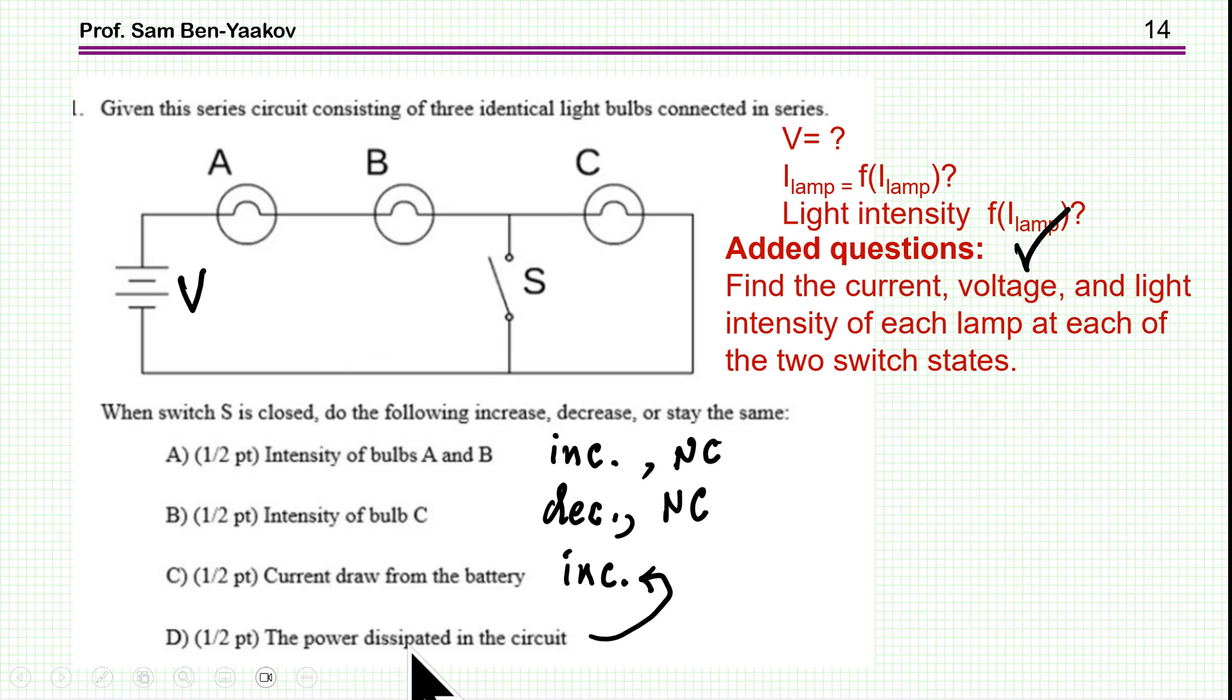Now, the power dissipated in the circuit, well, it's the same as the current. Because for a fixed voltage, if you are saying that the current is increasing, then the power is increasing. So this is just the same answer as this question. So this is just duplicating it.